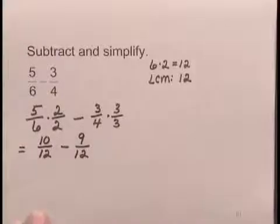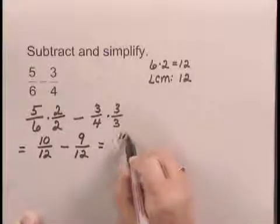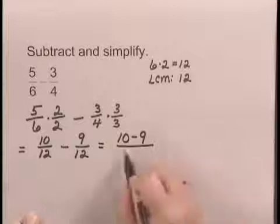Now that we have common denominators, we subtract the numerators, 10 minus 9, and we keep the common denominator 12.